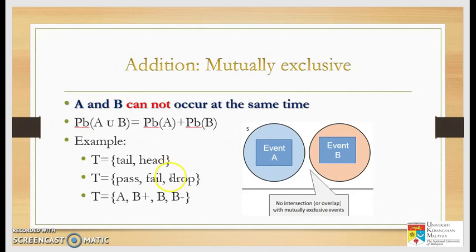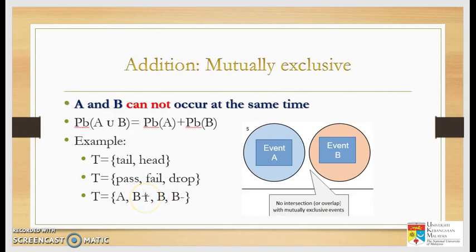Another example: for a course, a student can only pass, fail, or drop — not pass and fail at the same time, or pass and drop simultaneously. Similarly for grades, a lecturer assigns only one grade per course; you cannot have both A and B+ for the same subject. There is no intersection.